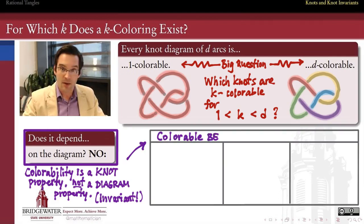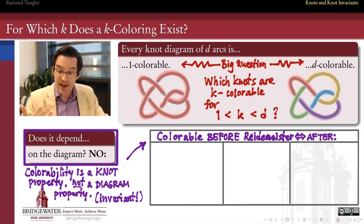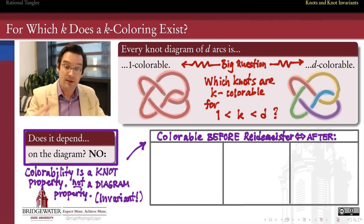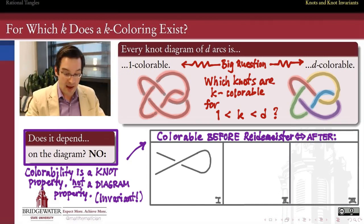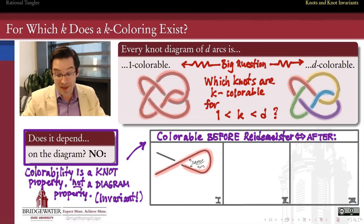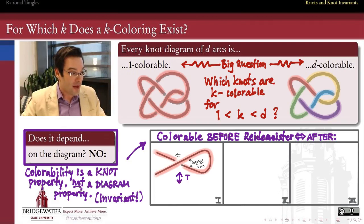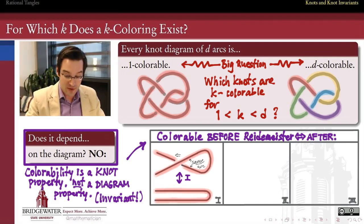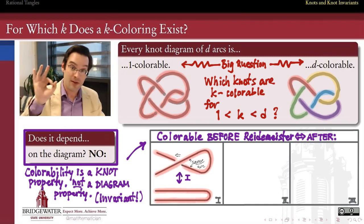We know colorability is an invariant because we can apply the three Reidemeister moves and check: if a knot was colorable before a Reidemeister move, is it guaranteed to still be colorable afterwards? For a type 1 move with a small loop, the entire arc forming the loop must be one color, so two of the three arcs at the crossing have the same color. That forces the third arc to match. When we apply the type 1 untwisting move, we get a single arc of that same color — colorability is preserved.